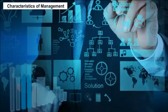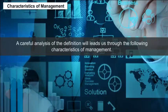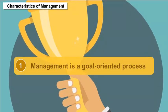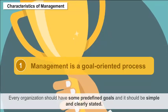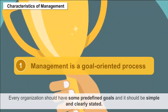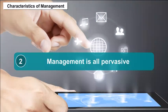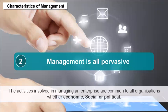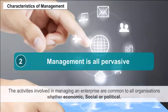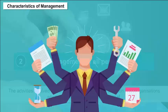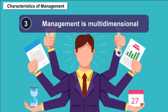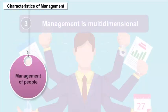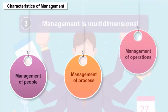Characteristics of Management: A careful analysis of the definition leads us to the following characteristics. First, management is a goal-oriented process — every organization should have predefined goals that are simple and clearly stated. Second, management is all-pervasive, as managing activities are common to all organizations whether economic, social or political. Third, management is a complex activity with three main dimensions: management of people, management of process, and management of operations.